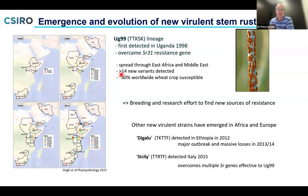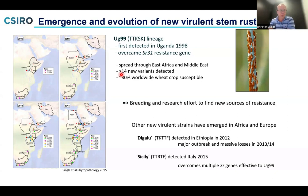That strain has since spread throughout Africa and into the Middle East, with at least 15 new variants detected that overcome other resistance genes used in wheat. A great deal of the wheat crop around the world is actually susceptible to isolates in this lineage. There have also been other important strains: one in Africa around 2012 known as the Digalu strain, causing massive outbreaks in 2013–2014, and another lineage that emerged in Europe in 2015 that overcomes many resistance genes effective against UG99.